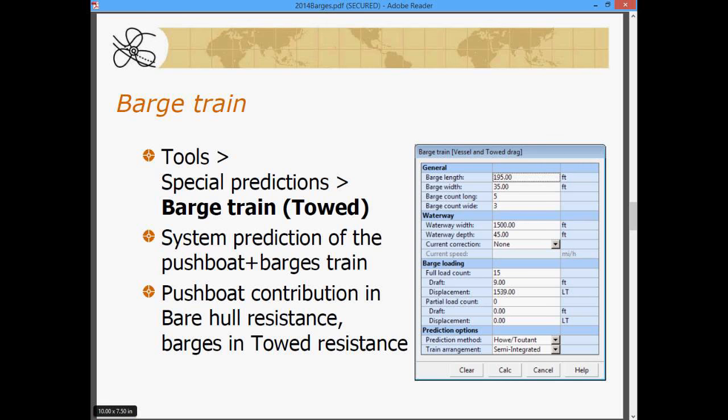And in the bottom, we talk about the prediction options, the prediction method that we'll refer to here in a minute, and the barge train arrangement for the Holtrop method, which is whether the barges are very well integrated or they're a mix of raked barges and un-raked barges. There's additional information in the NAVCAD user's guide and help system that will guide you to the selection of this option.